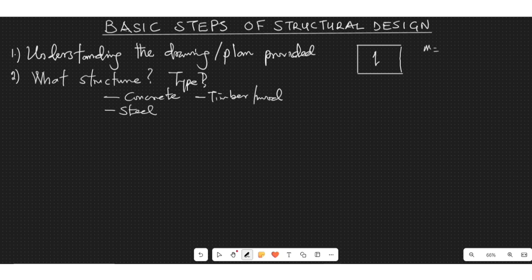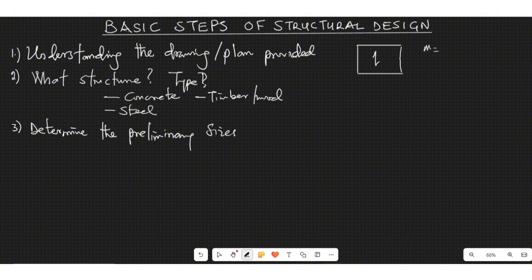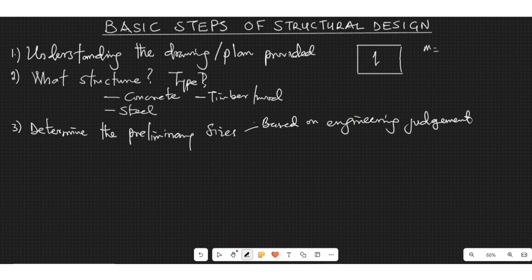So you have to know which exactly are you dealing with. Then the third one is you have to create or determine the preliminary sizing based on engineering judgment or experience. But you just have to start somehow, and as a matter of use and experience you would be able to know what sizes are suitable for what kind of structure and what kind of purpose and what kind of load.